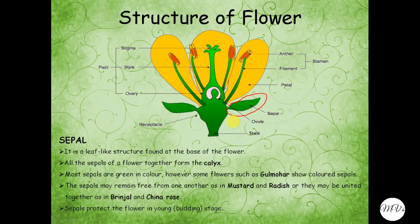Most sepals are green in color; however, some flowers such as gulmoha show colored sepals. Gulmoha shows red colored sepals. The sepals may remain free from one another as in mustard and radish, or they may be united together as in brinjal or china rose. In the above diagram, we can see that the sepals are free from one another. The main function of the sepals is to protect the flower in the young or budding stage.